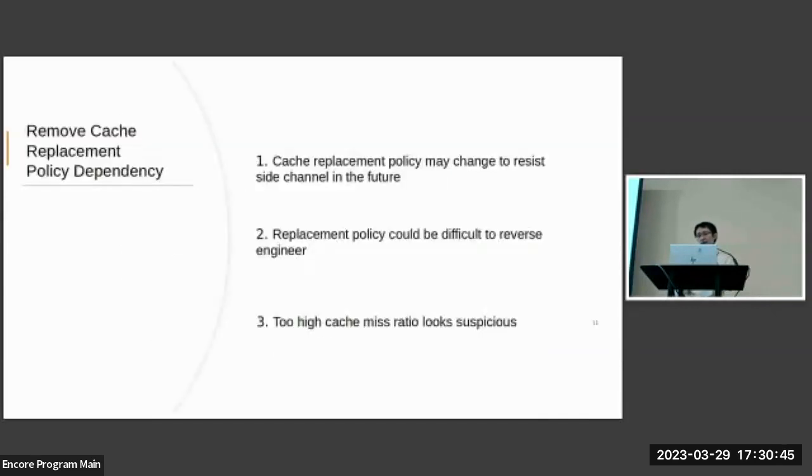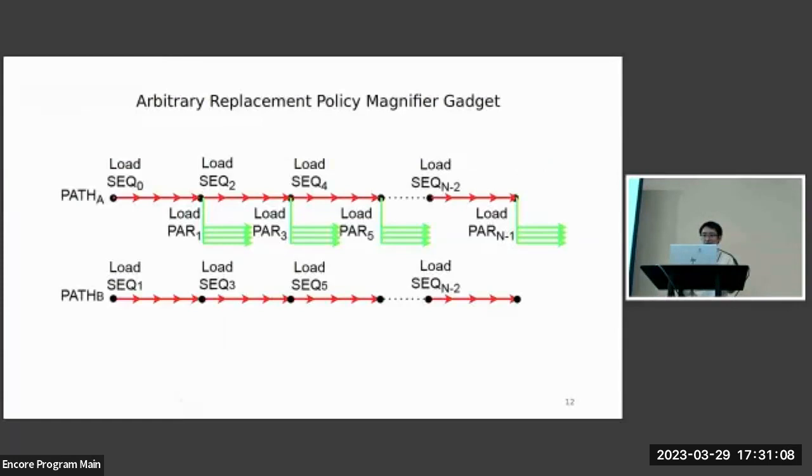The cache replacement policy may change in order to resist side channels in the future, right? And also, although many papers work on reverse engineering the replacement policy, it is still very difficult. Besides, the burst of cache misses looks abnormal and can be easily distinguished and detected. So is there a chance that cache replacement policy dependency can be removed? Yes, there is. By using multiple cache sets instead of just one, as in the previous gadget, we create two paths that load data from different cache sets, helping us to achieve the goal of not depending on any particular replacement policy.